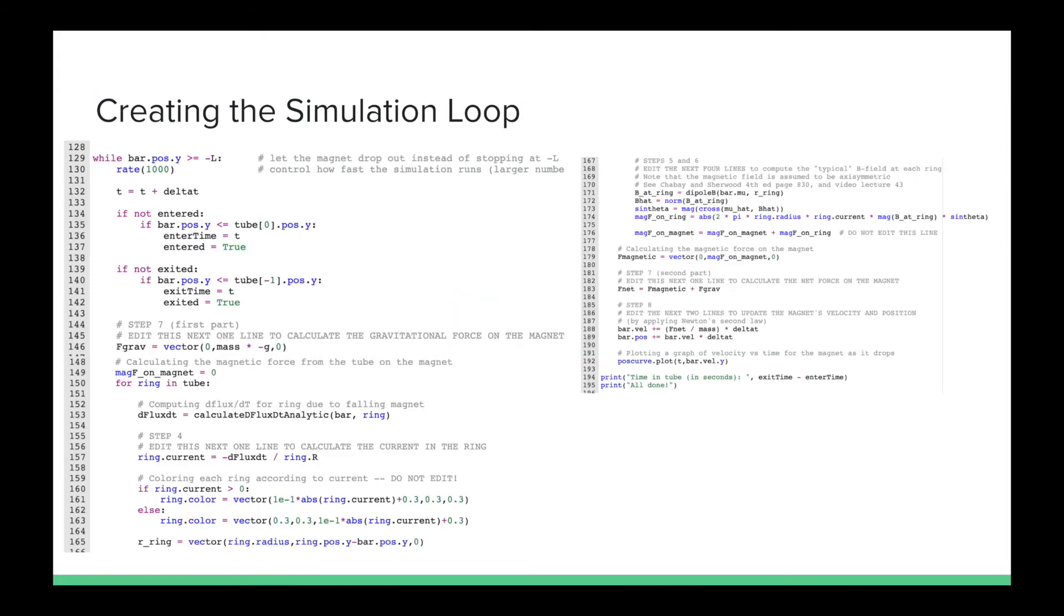Next we create the simulation loop of the magnet falling through the aluminum foil tube. The loop calculates the current from the EMF in the previous code, as well as the magnetic force based on that current. It then calculates the net force on the magnet and uses Newton's second law to continuously update the position and velocity of the magnet as it falls through the loop.